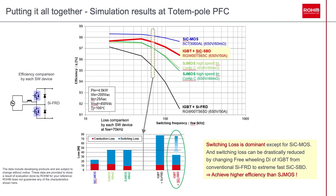Putting it all together, we can run simulations of various circuits. We are simulating a totem pole PFC switching topology and looking at the efficiency of the fast-switching leg for each device. We measured four different solutions: first, IGBT plus silicon FRD, which got the worst efficiency result; second, superjunction MOSFETs, which got the second worst efficiencies; third, IGBT with SiC SBDs, which got the second best efficiency; and fourth, the SiC MOSFET, which got the best efficiency. Taking it further and analyzing where losses originate, using a SiC diode as the freewheeling diode to the IGBT makes the switching loss reduction significant. This allows the total loss to be very similar to the SiC MOSFET, achieving just under 98% total efficiency.